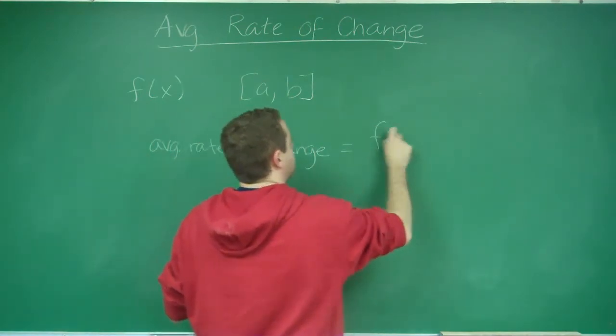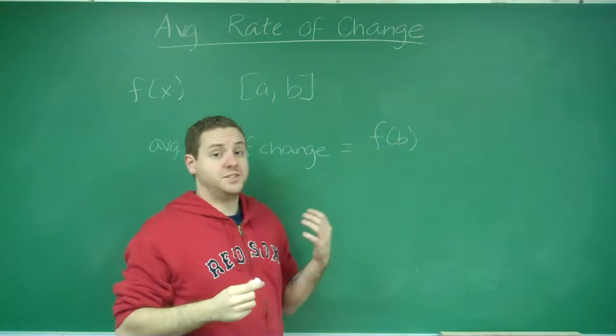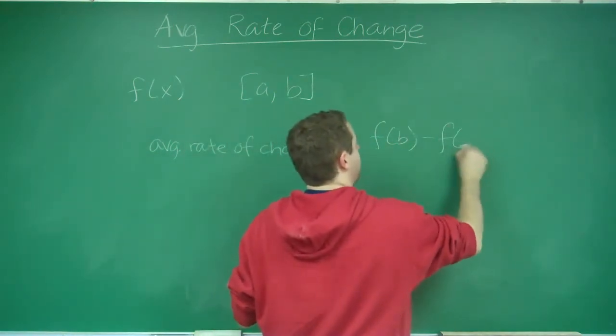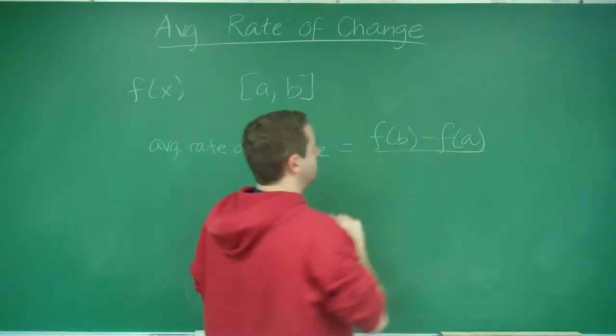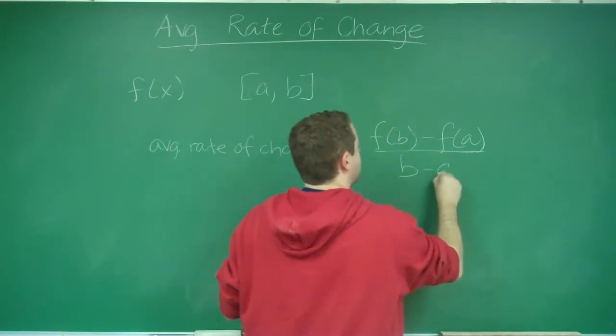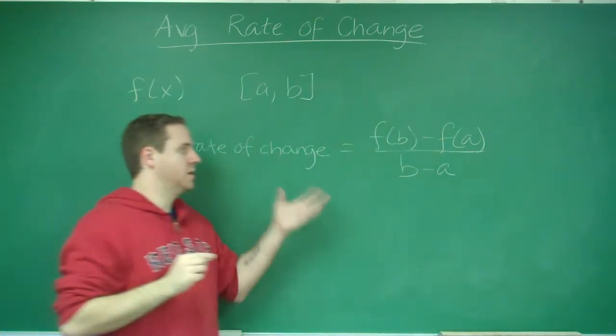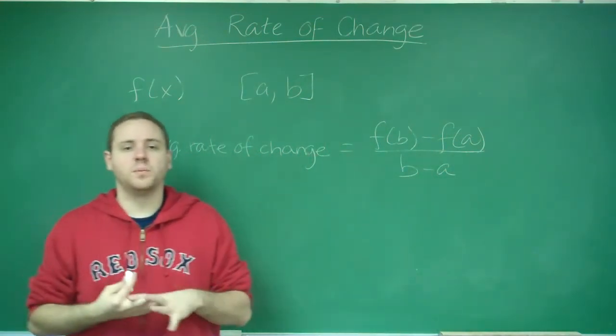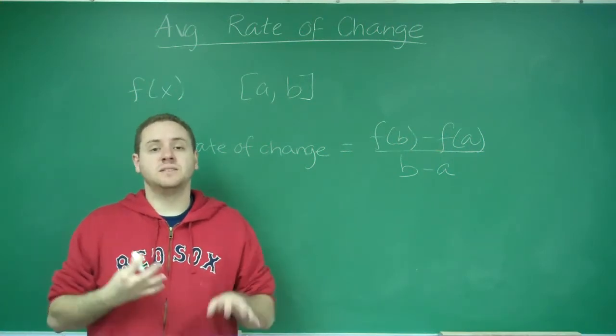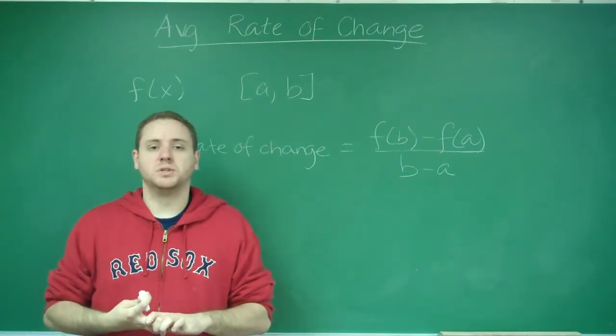So your average rate of change is simply going to be equal to f of b, y2, minus f of a, y1, over b minus a, x2 minus x1. This is exactly your slope formula, and the average rate of change is simply asking for the slope between two points.